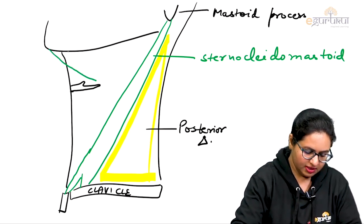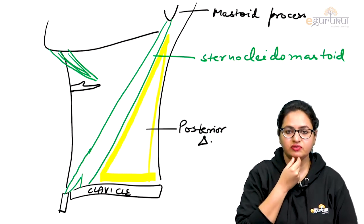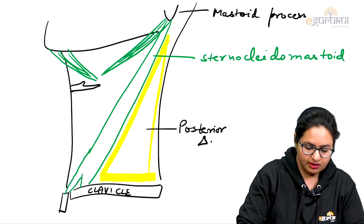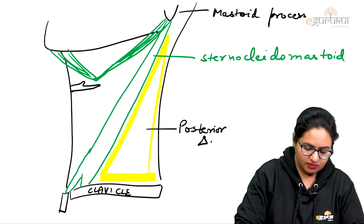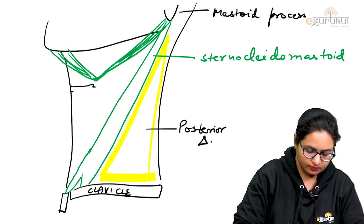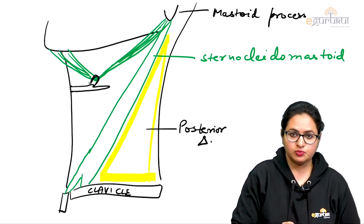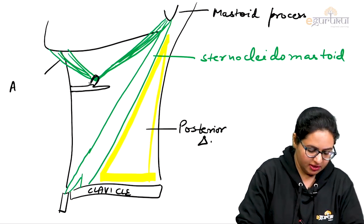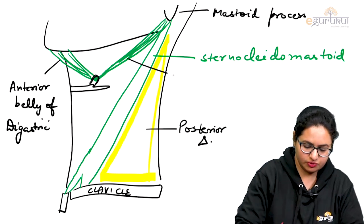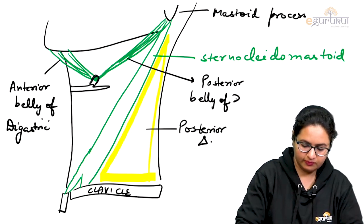The anterior belly of the digastric is attached to the digastric fossa, which is present beneath the chin of the mandible. The posterior belly is attached to the medial aspect of the mastoid process, specifically to the digastric notch. They have an intermediate tendon which is suspended by a fibrocartilaginous pulley attached to the hyoid bone. So this is the anterior belly of digastric and this is the posterior belly of digastric.